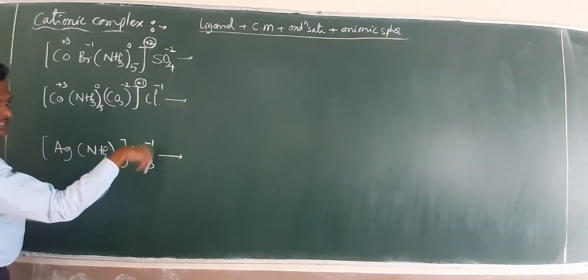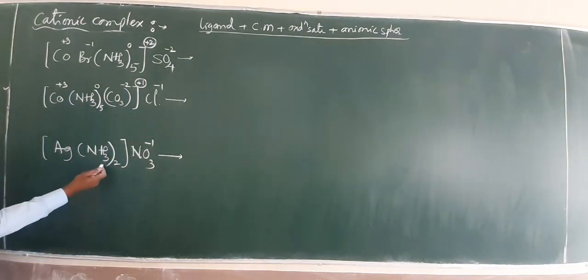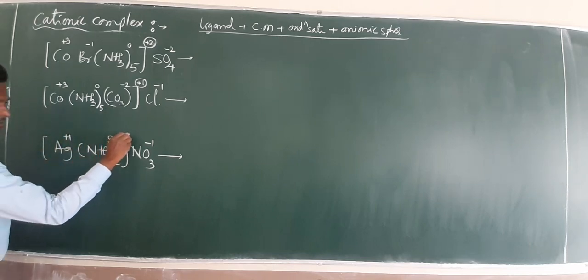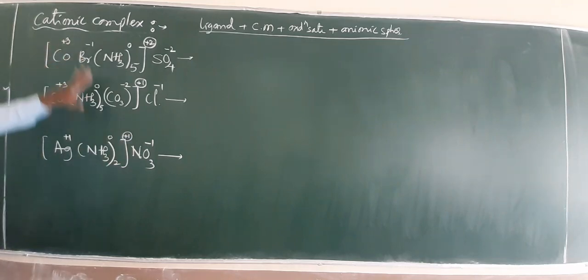NO3, nitrate is minus 1. Ammonia, this is 0. Automatically silver is plus 1. The net charge is plus 1, or a cationic complex.